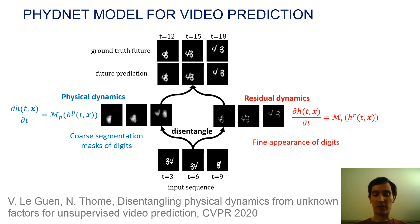But since physics is often insufficient to fully describe generic videos, as in this moving MNIST example, we learned a data-driven residual branch responsible for capturing complementary information. In this example, physics captures coarse moving segmentation masks and the residual captures the fine appearance of digits.